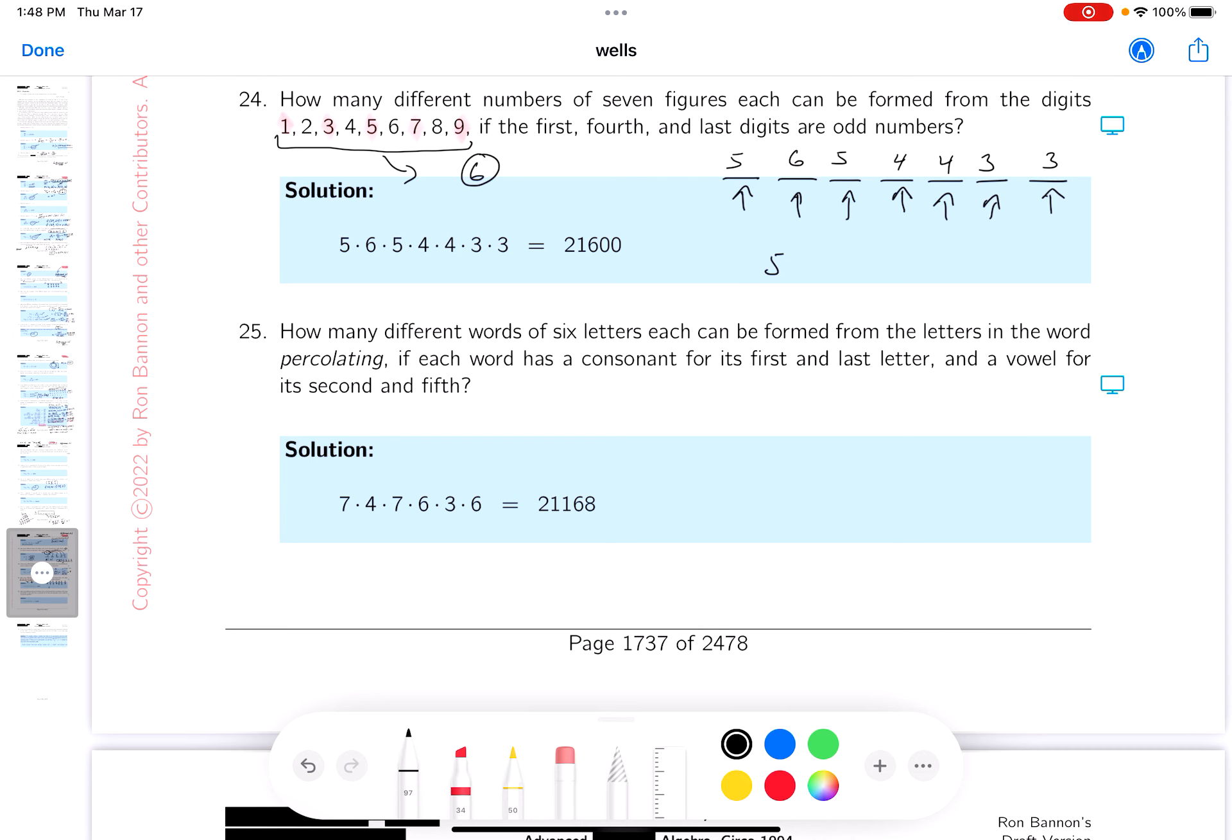So what do you got? Five times six times five times four times four times three times three. That's what's listed over here, and that's the number. Again, they're listing 5-6-5-4-4-3-3. Again, do the multiplication and calculator. However you want to do it is fine by me.